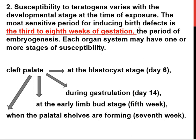The second principle is that susceptibility to teratogens varies with the developmental stage at the time of exposure. The most sensitive period for inducing birth defects is embryogenesis, that is 3 to 8 weeks of gestation. Each organ system may have one or more stages of susceptibility — for example, cleft palate can occur at the blastocyst stage, during gastrulation at day 14, during the early limb bud stage, or when the palatal shelves are forming.